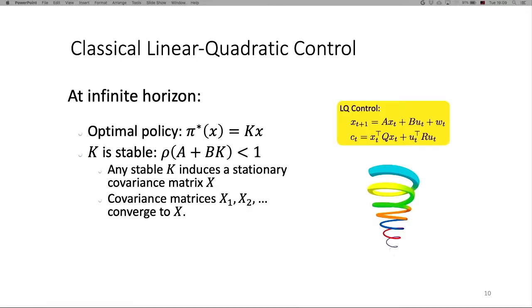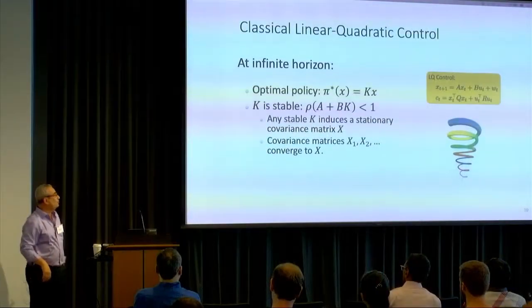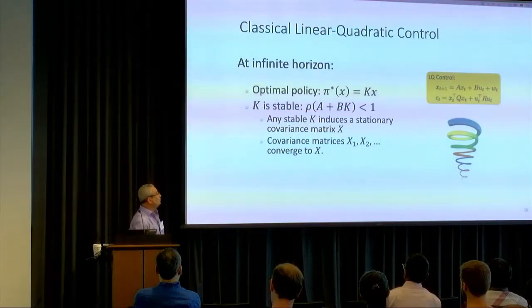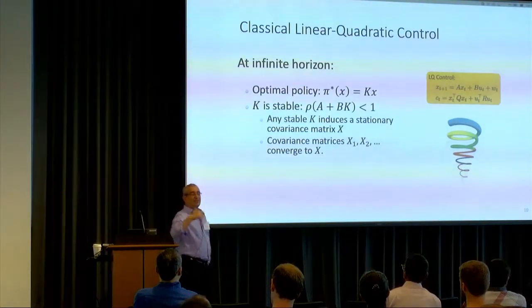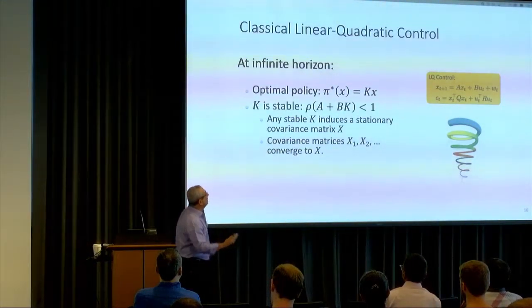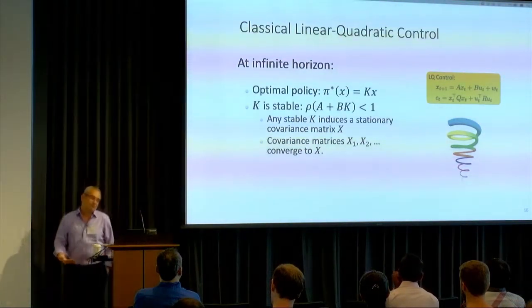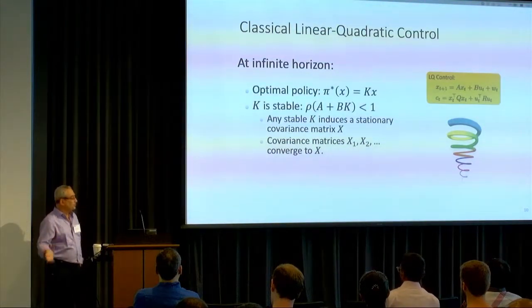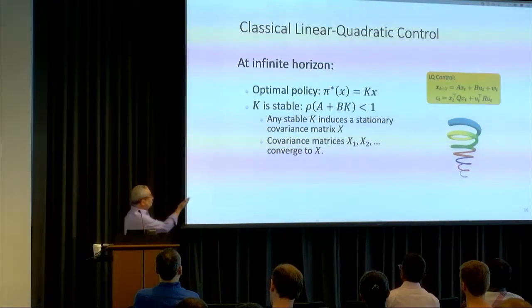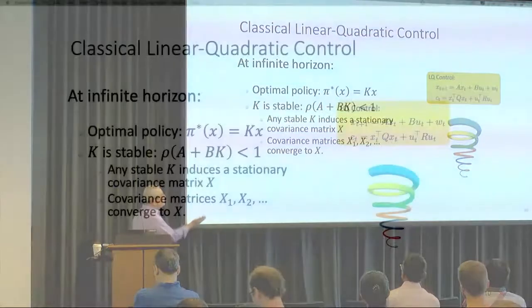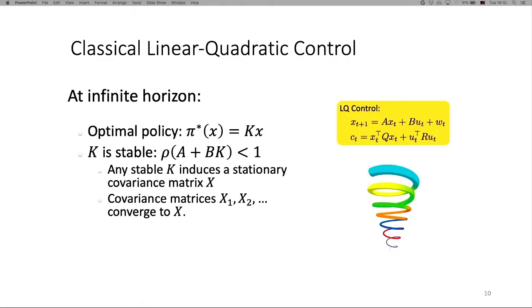These systems might be stable or unstable. A stable system means: if you take the matrix K and look at A plus BK, you want all the eigenvalues to be less than one. If eigenvalues are less than one, things converge; if greater than one, they diverge. If the system is stable, it induces a stationary covariance matrix. The covariance matrices generated over time will have a limit, which is the covariance matrix K.